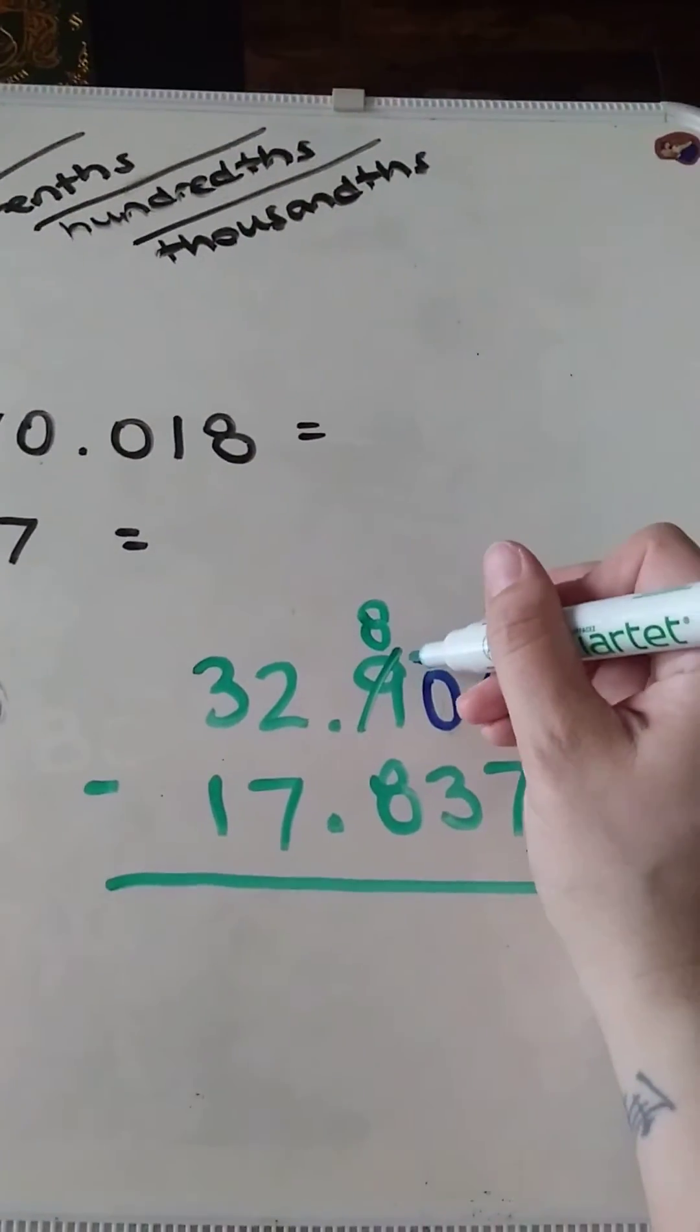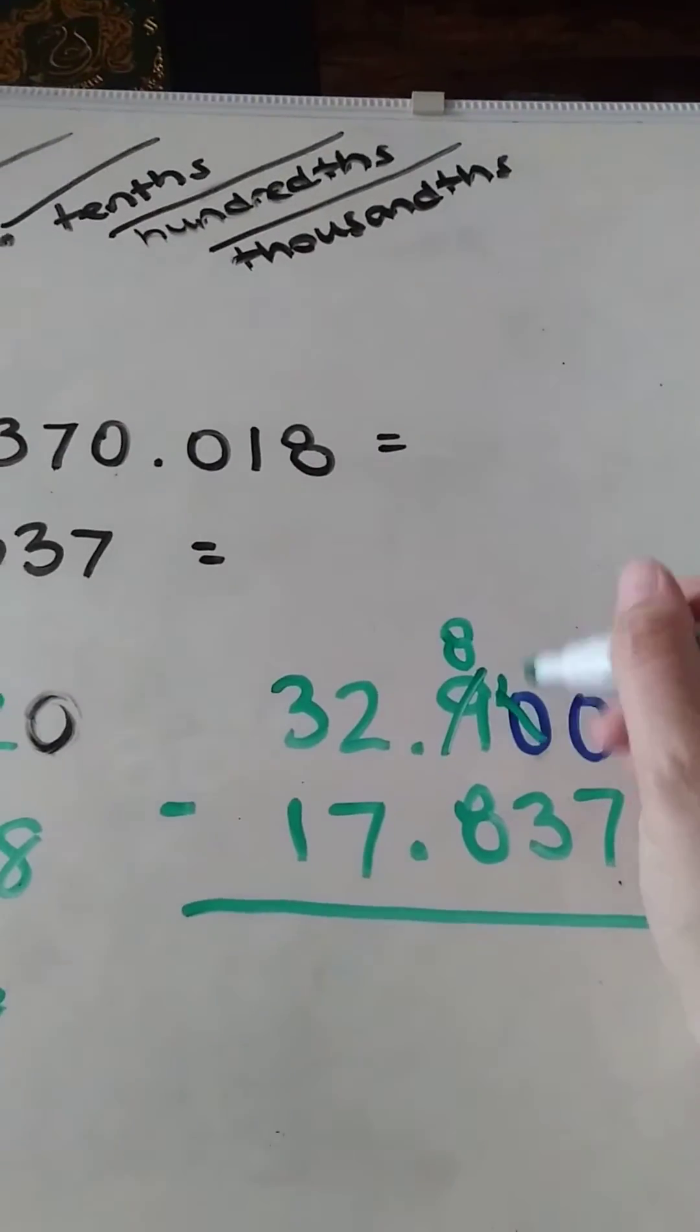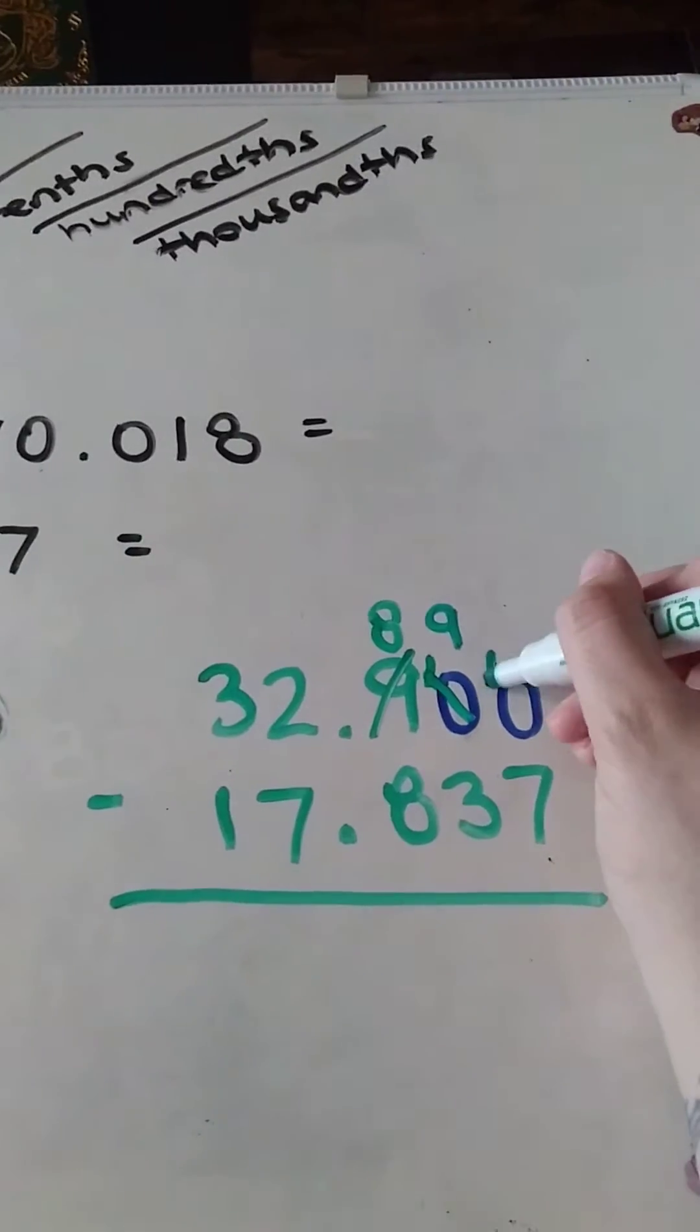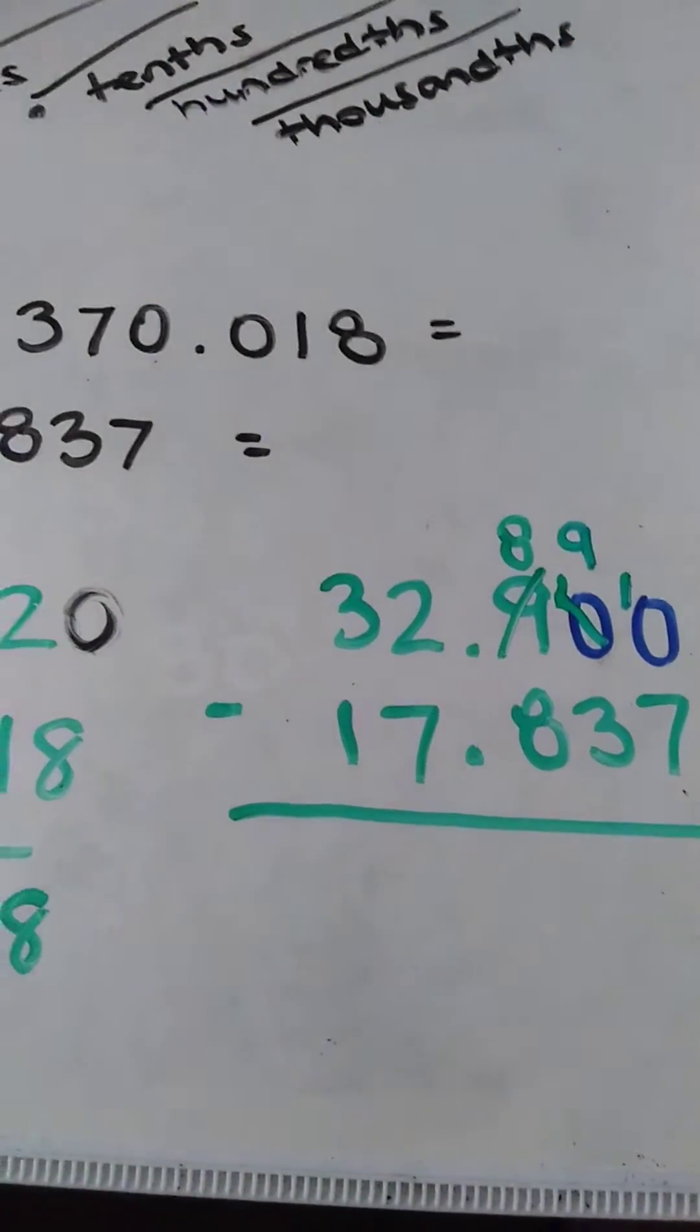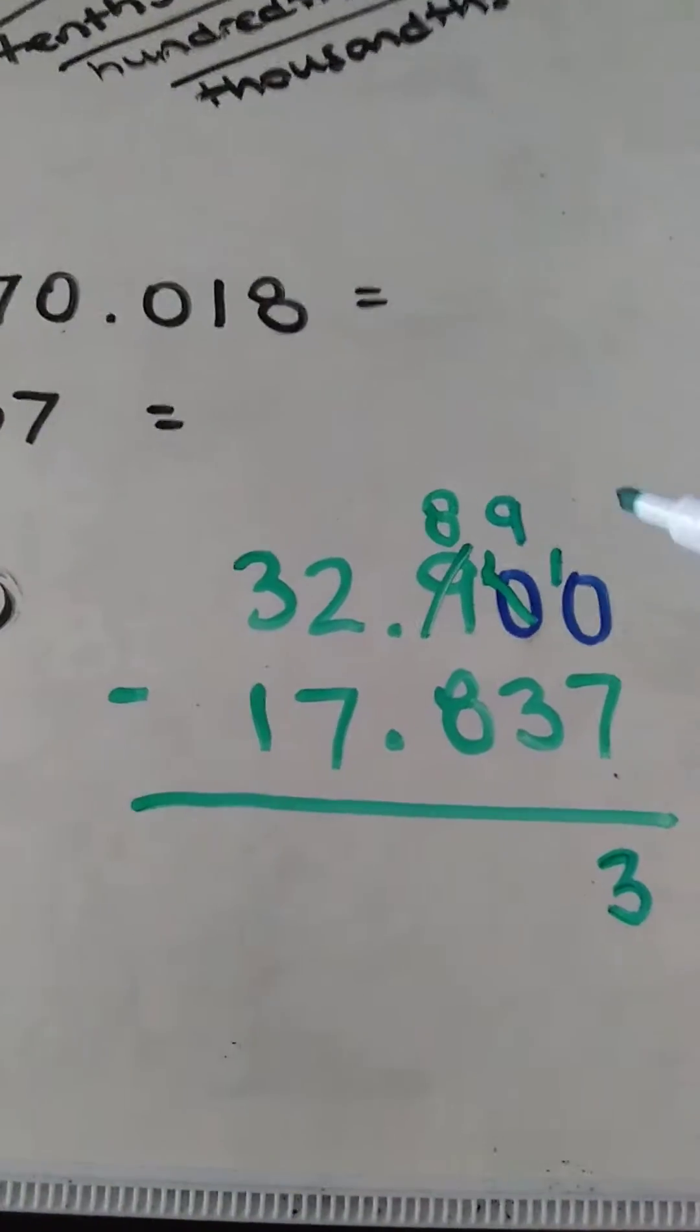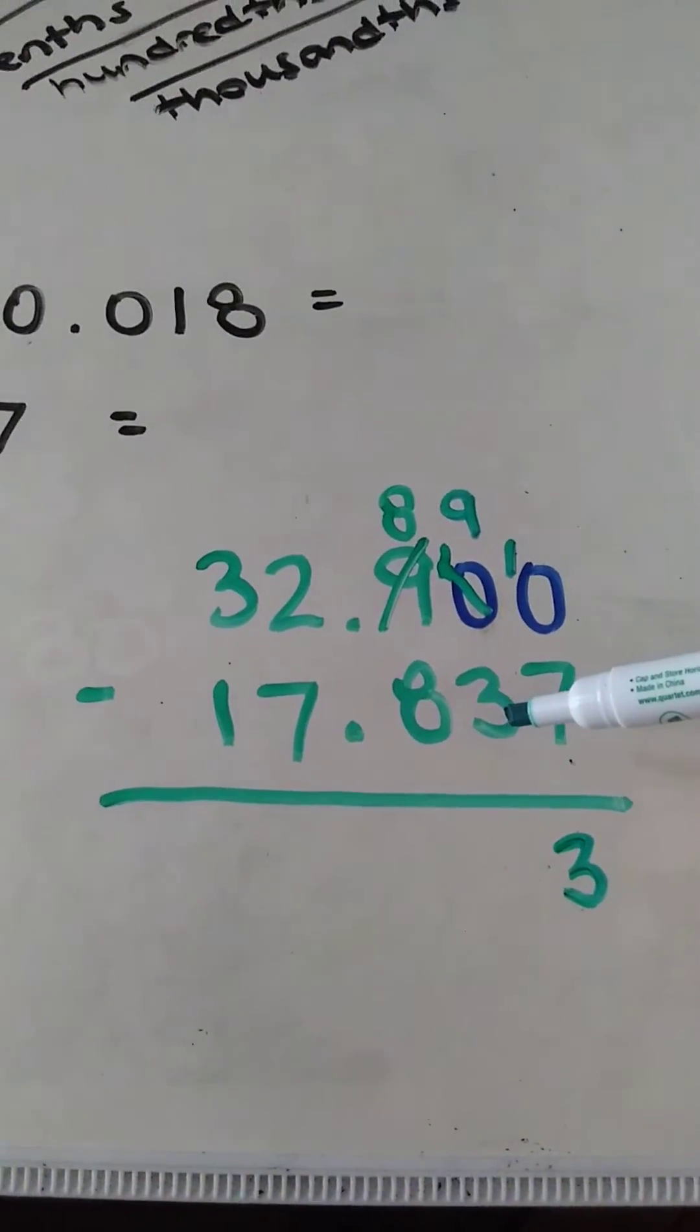Bring it over here and bring it over here. Okay, so ten minus seven is three, nine minus three is six.